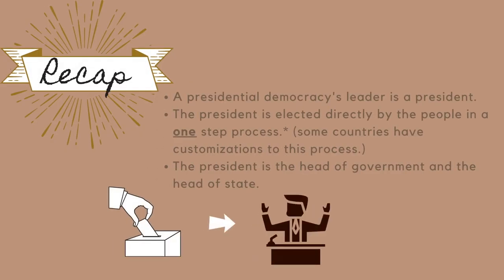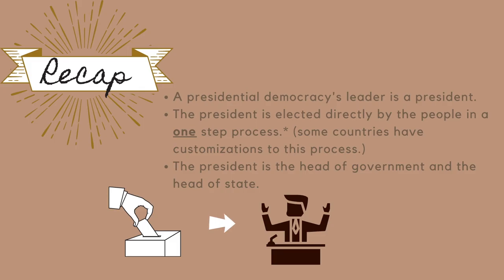To review: a presidential democracy's leader is a president. The president is elected directly by the people in a one-step process, though some countries have customizations to this process. The president is the head of the government and the head of state.